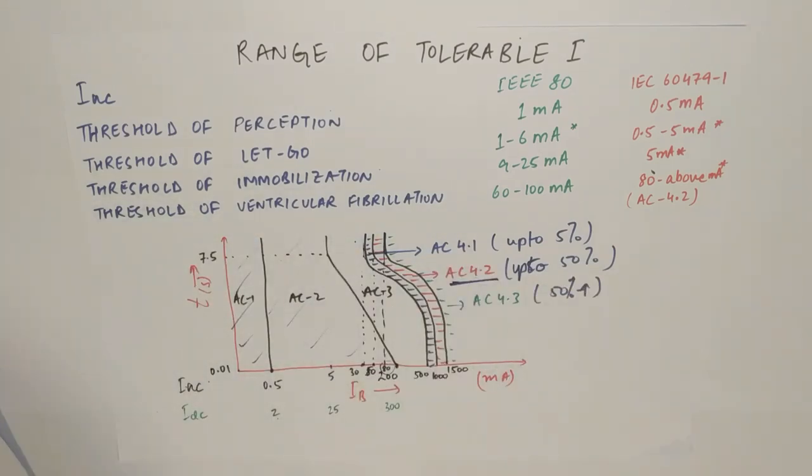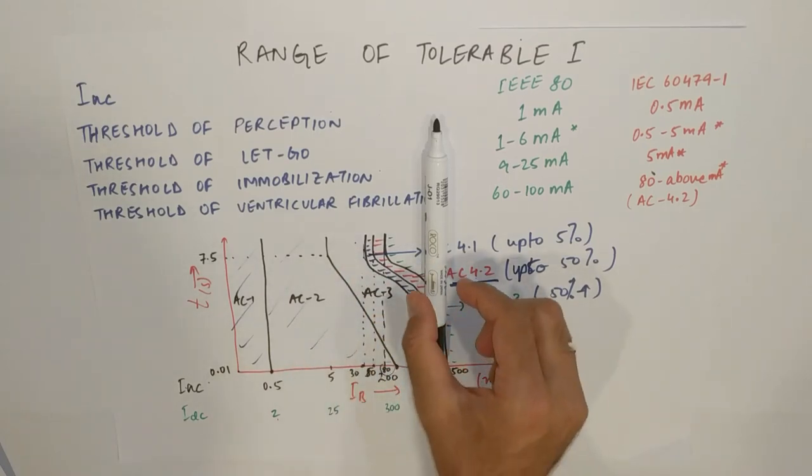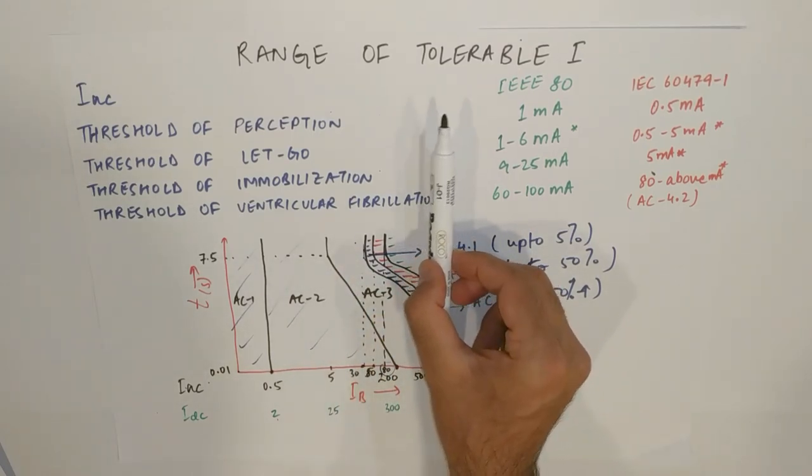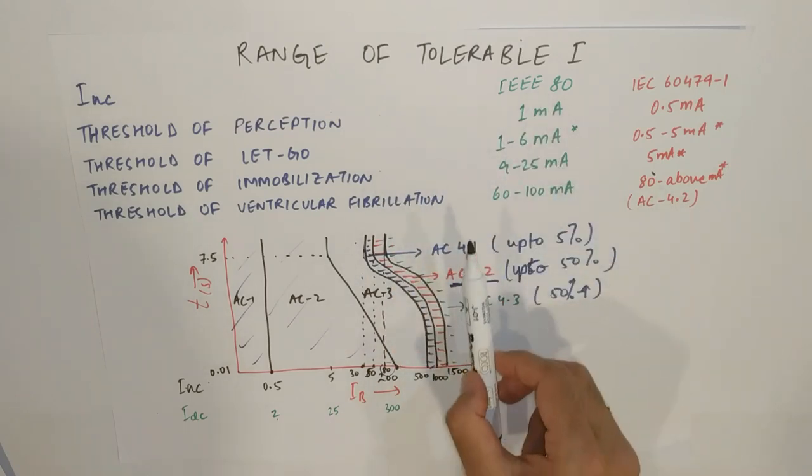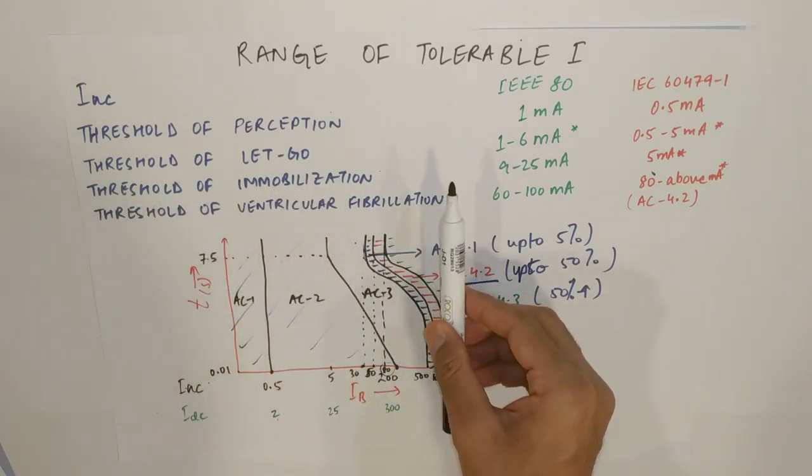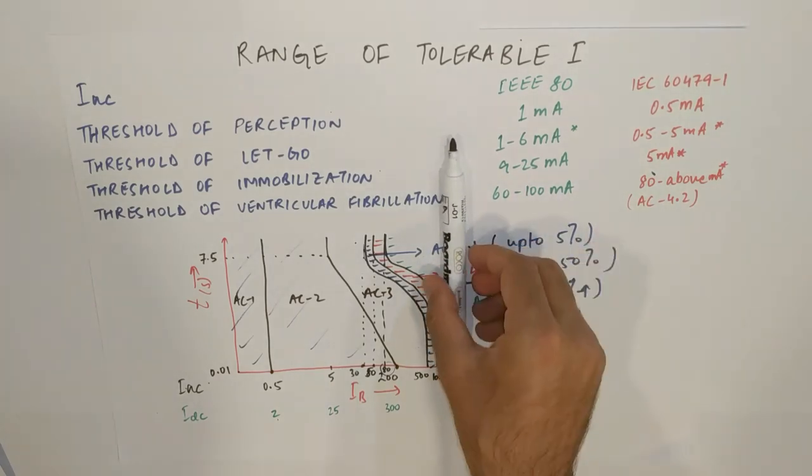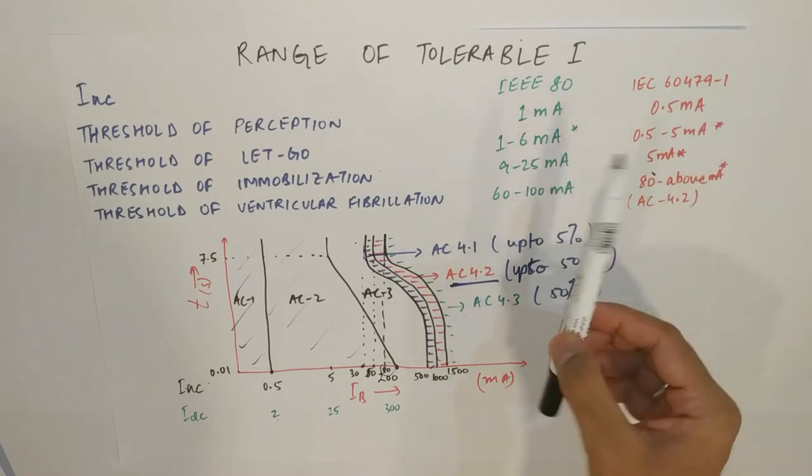There are four types. One is the threshold of perception. Suppose this is the body from which the current is flowing, this marker. And perception means if I touch it and there is current flowing and I feel some tingling effect, some current is flowing through me also. So, this amount is equal to 1 milliamp as per IEEE 80. For threshold of let go, let go means I am holding this, I am touching the equipment, the frame of the washing machine. The current is flowing through me. But still, I can remove my hand. I can remove my hand easily. Not a problem. That is 1 to 6 milliamps, star marked as per IEEE 80. 6 milliamps is for women, 9 milliamps for men.